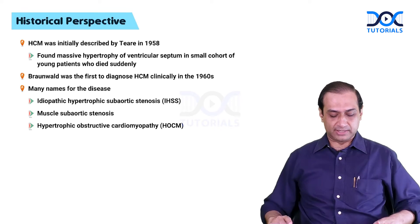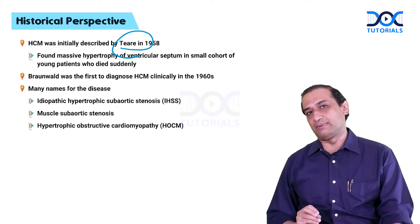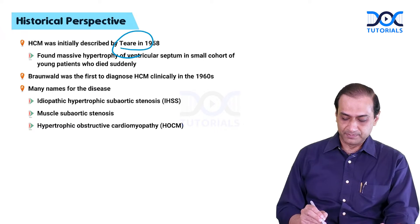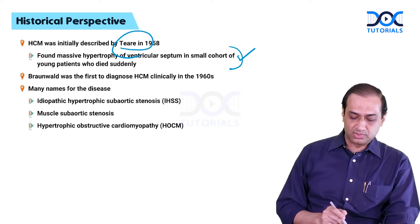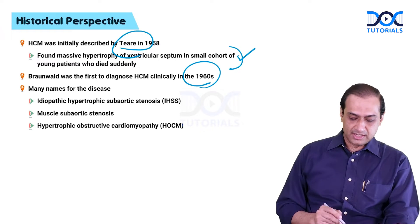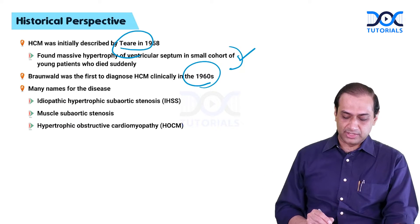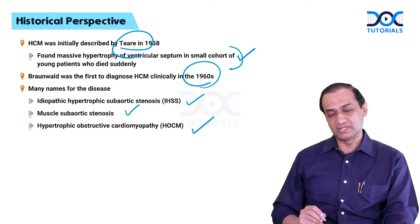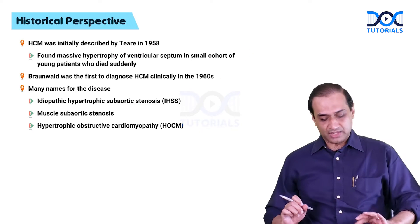Starting with the historical perspective, it was first described by Thierry et al. in 1958. He was the first to describe hypertrophic cardiomyopathy, finding a massively hypertrophied ventricular septum in a small cohort of young patients who had died suddenly. Braunwald was the first to diagnose it clinically in the 1960s, and since then various names have been ascribed to this disease, including idiopathic hypertrophic subaortic stenosis, muscle subaortic stenosis, and hypertrophic obstructive cardiomyopathy.